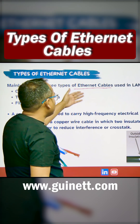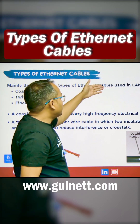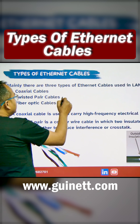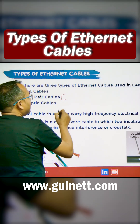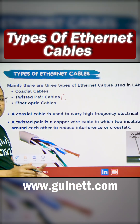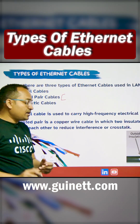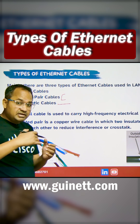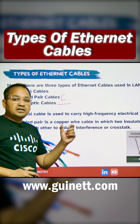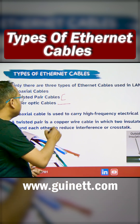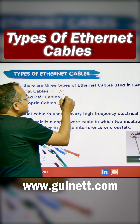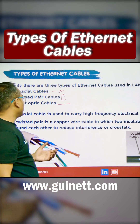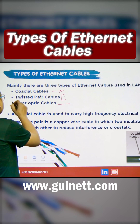We also have twisted pair cables and fiber optical cables. These cables are used to transmit data in different scenarios. The twisted pair cable works well for LAN, while fiber optic cable passes signals in the form of light. The others pass signals in the form of electric pulses.